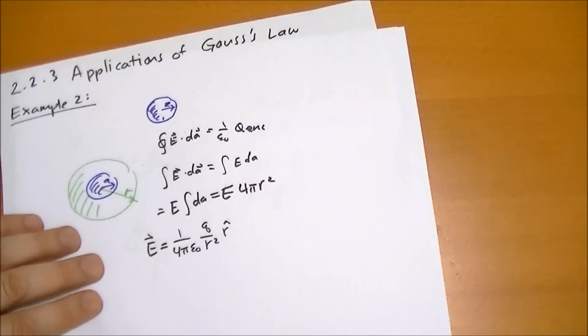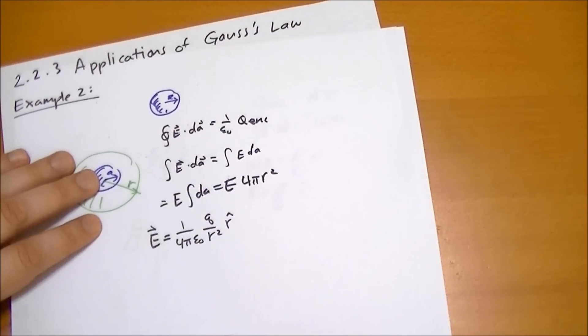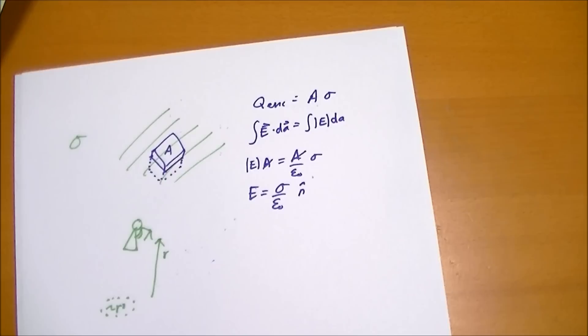Which I guess if you think about it kind of makes sense. This is the zero-dimensional point source. The cylinder is a one-dimensional line source, and this is a two-dimensional plane source.